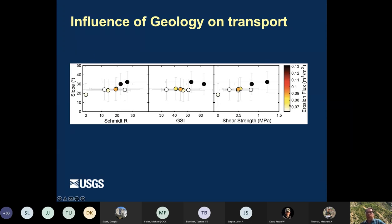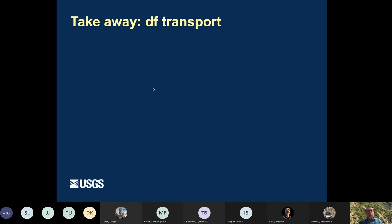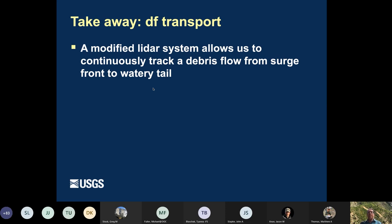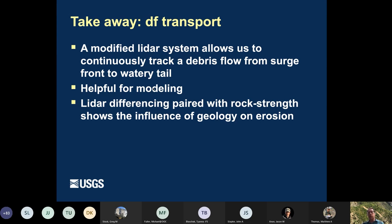So Schmidt hammer geological strength index and shear strength. And we compare that against slope. And then these dots are colored by how much erosion flux we saw. And yeah, at different slopes. And what we see is this clear trend where the stronger rocks actually you see the most erosion on the highest slopes. And if you think about that, it kind of makes a lot of sense because strong rocks should hold up steeper slopes and erosion of sediment that's in a channel should increase when that channel steeper. So this is kind of a really cool combination of using LIDAR and being able to tie that to rock strength measures. OK, so for debris flow transport, big takeaways, our modified LIDAR system allowed us to continuously track debris flow from the surge front all the way to the watery tail. And it's been helpful for modeling. And the LIDAR differencing paired with the rock strength shows the influence of geology on erosion.